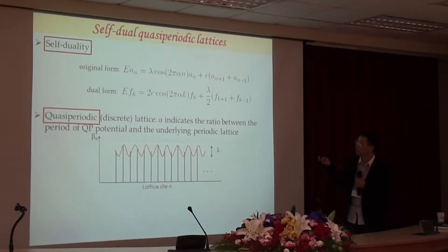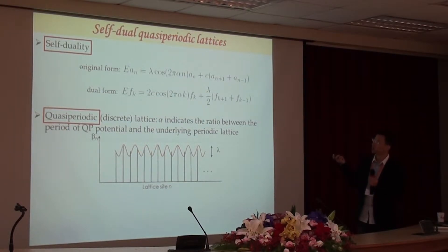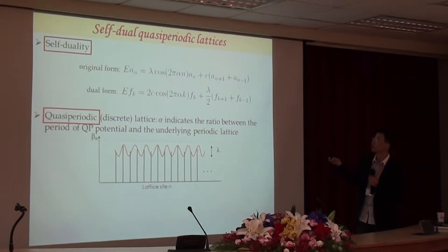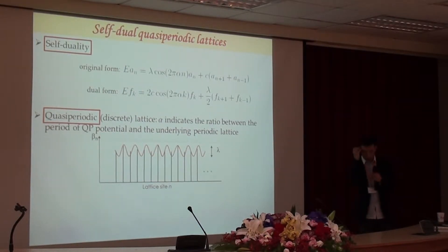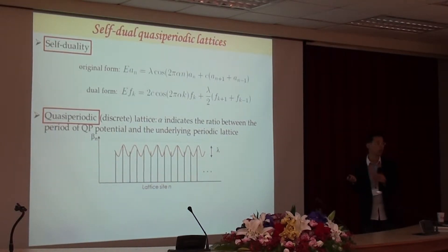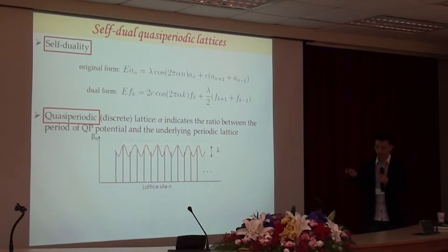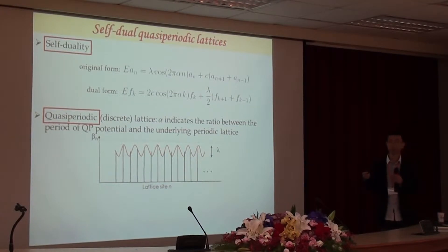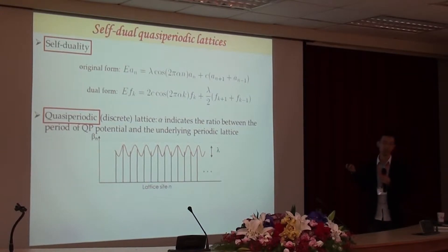This is the equation of the Aubry-André model. We can make a Fourier transformation and see that the dual form is the same as the original form, just with some coefficient interchange. As we know from the uncertainty relation, delta-k times delta-x equals a constant. So if a state is localized in real space, the dual transformation will make it delocalized in momentum space — that's the self-duality.